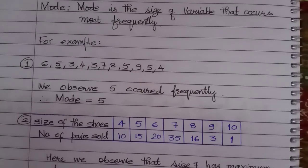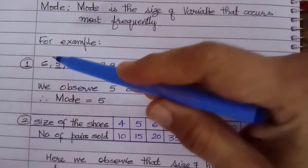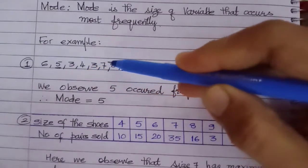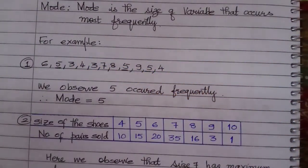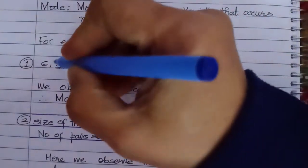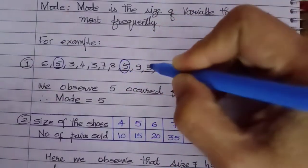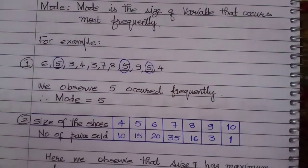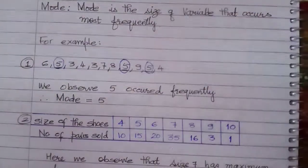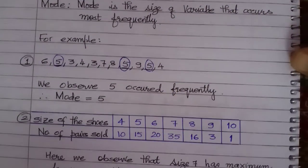I've taken a raw data with 12 observations, and we see that this 5 is occurring most of the time. So the data which occurs most frequently is called as mode.